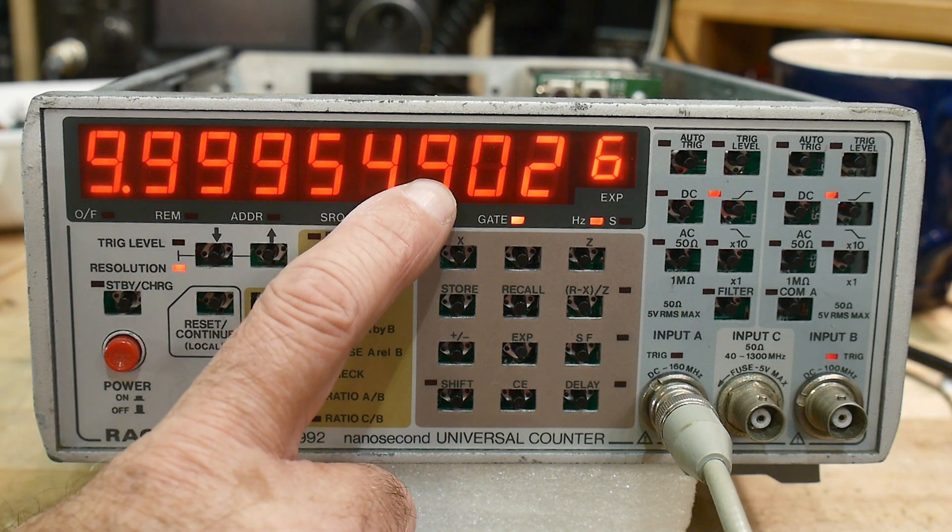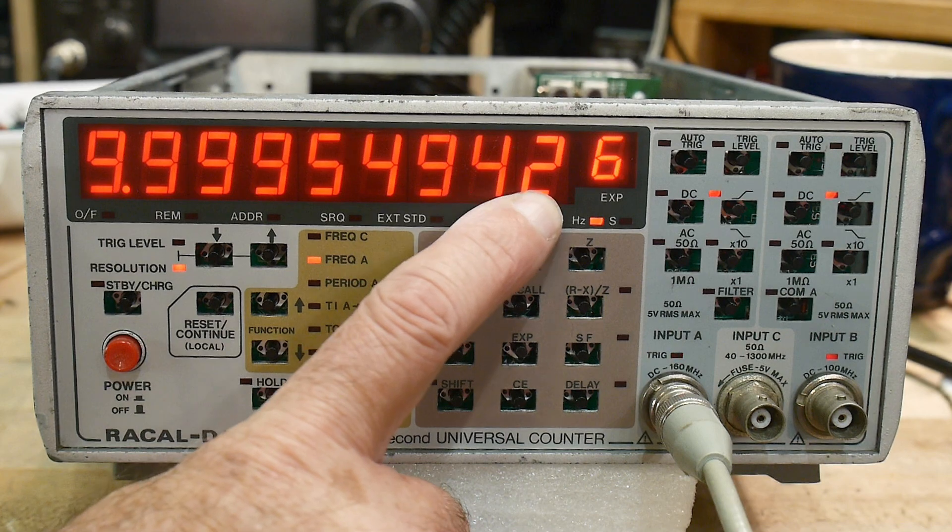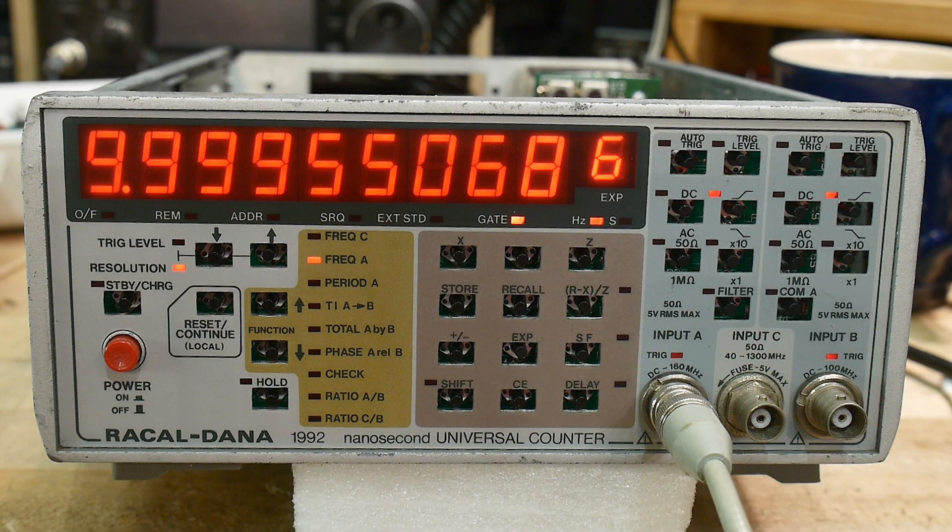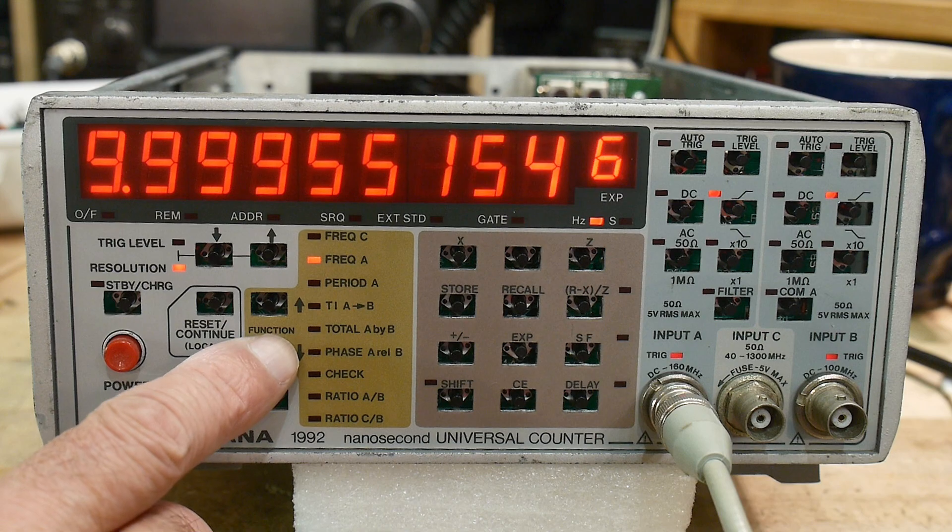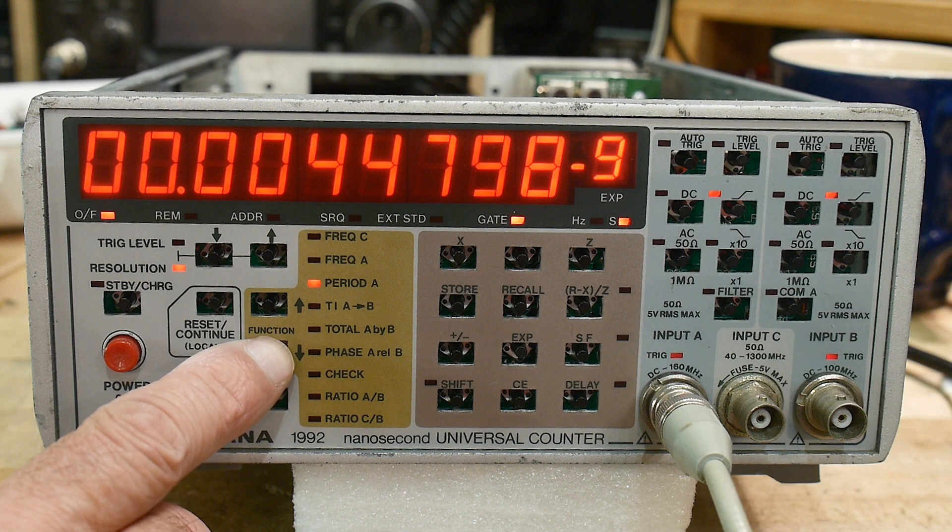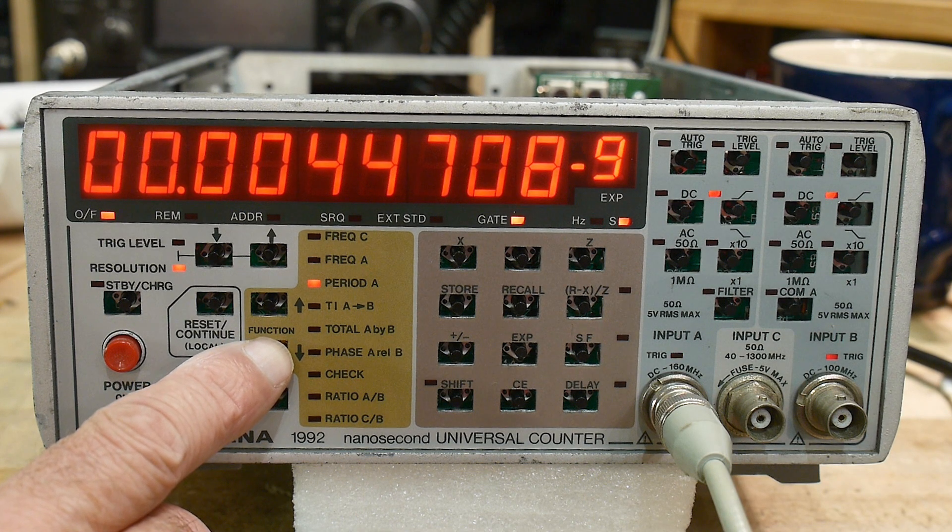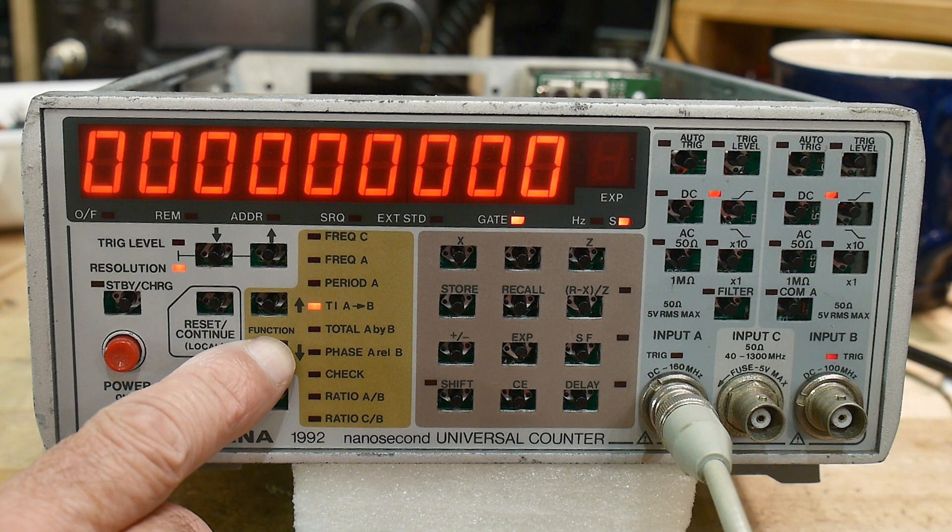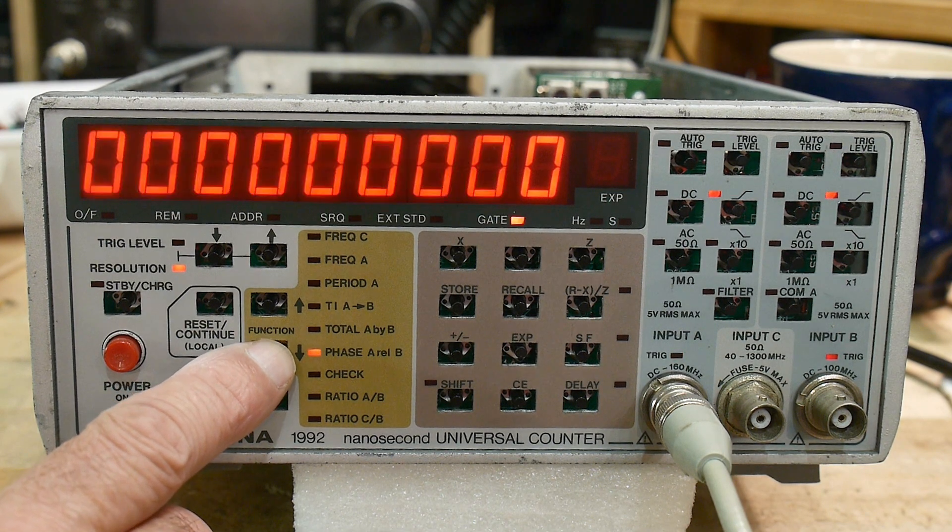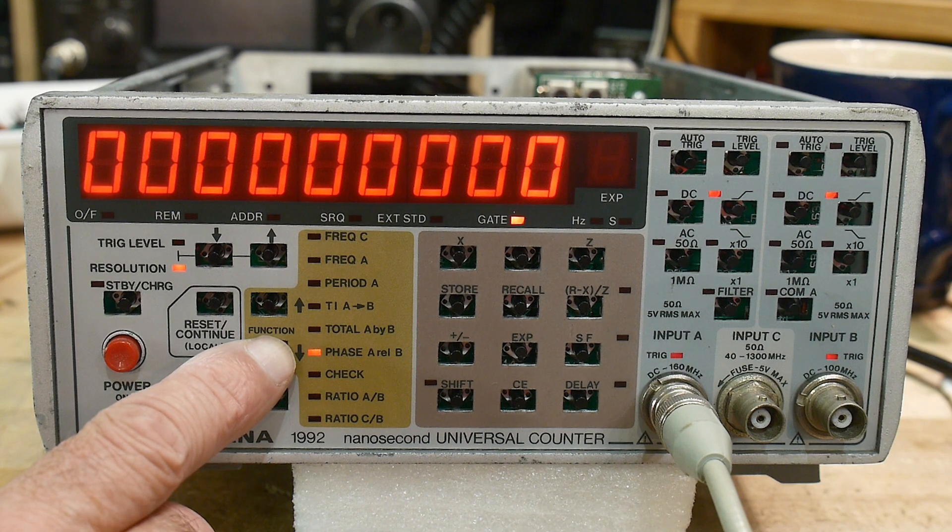This is kilohertz, this is hertz, tenths of hertz, hundreds and tenths. Yeah, these are hertz, tenths of hertz, hundreds of hertz. Looks like it's working great. Let's see if the function thing works. Yeah, period A. There's the period. Time interval from A to B. Total phase between A and B. That's pretty cool.